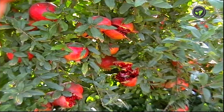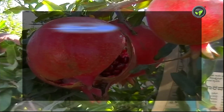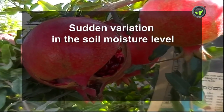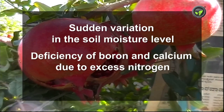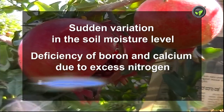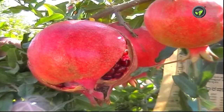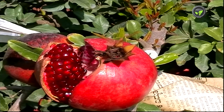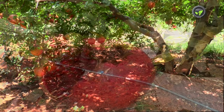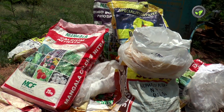Cracking of matured fruit is another major problem. Sudden variation in soil moisture level, deficiency of boron and calcium due to excess nitrogen, and improper usage of hormones are the reasons for fruit cracking. Healthy fruits crack suddenly, leading to crop loss of up to 50%. Maintain uniform soil moisture by drip irrigation and give correct doses of fertilizers.